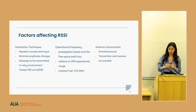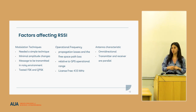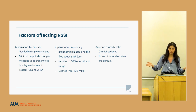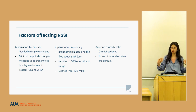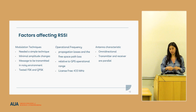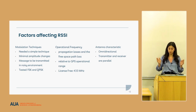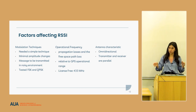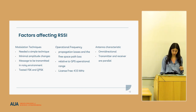Regarding antenna characteristics: since we didn't focus on increasing range but on improving distance measurement techniques, the antennas we used were omnidirectional and were placed parallel to each other on both the transmitter and the receiver.